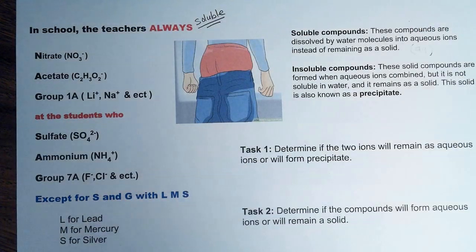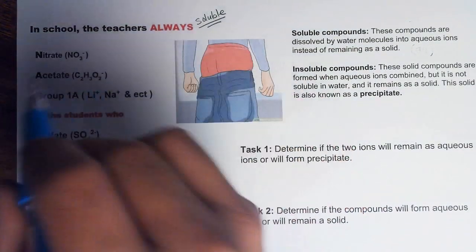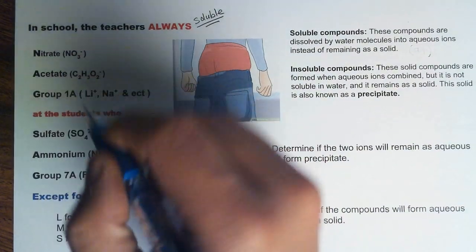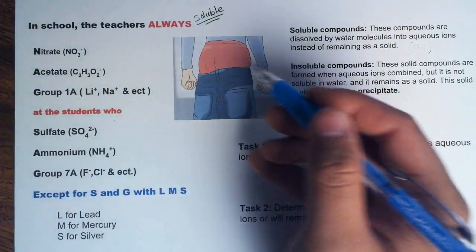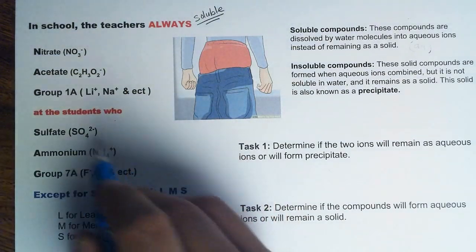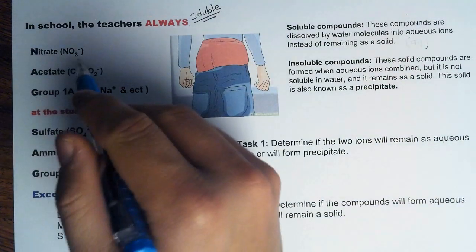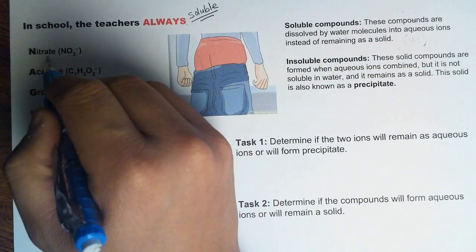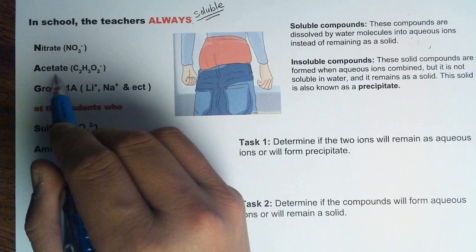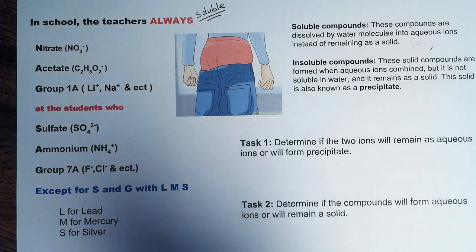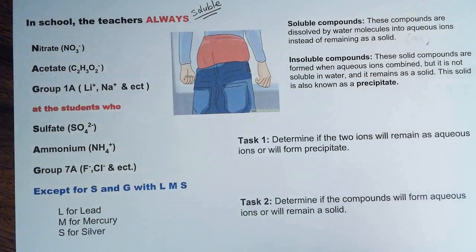The rules apply to always soluble, with a few exceptions. So in school, the teacher always nags — N-A-G — at the students who sag. For N-A-G, it's always soluble: the N represents nitrate, so any compound that has nitrate in it will always be soluble. Then A is for acetate, so any compound with acetate will always be soluble. And any compound with the ions of Group 1A will always be soluble.